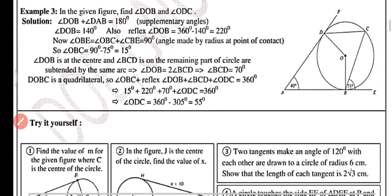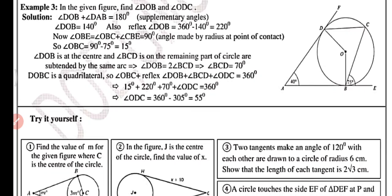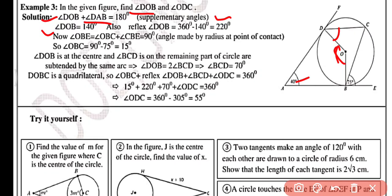Example number three: from the given figure, find angle DOB and angle ODC. Angle DOB + angle DAB = 180 degrees, as these are supplementary angles as shown in example two. Therefore angle DOB equals 140 degrees.